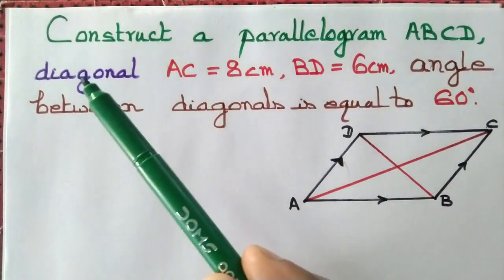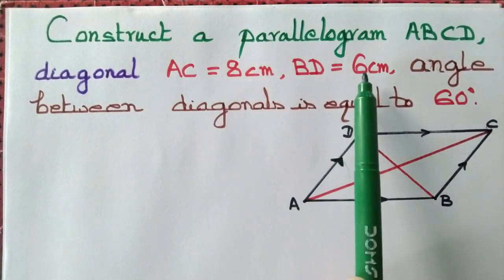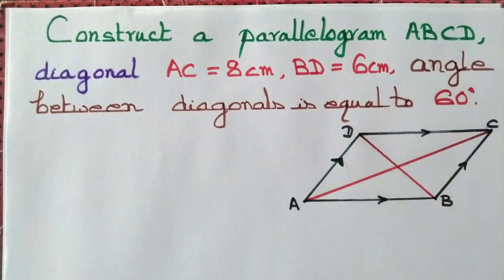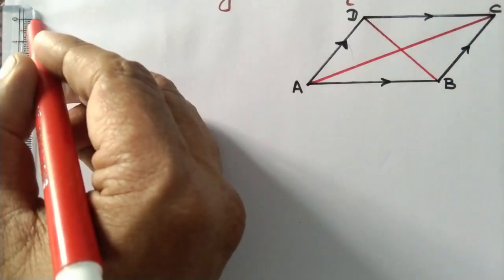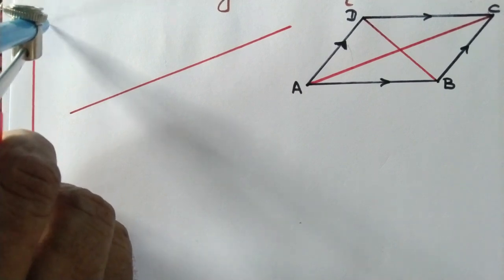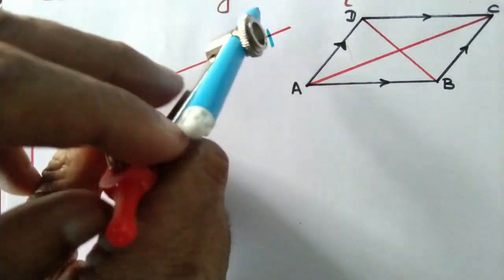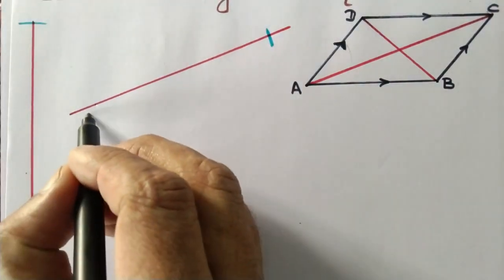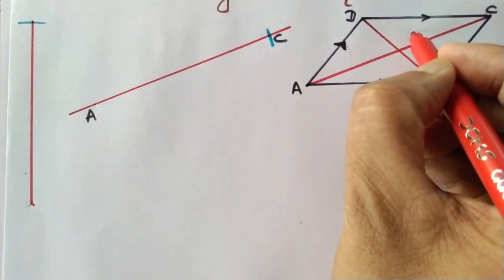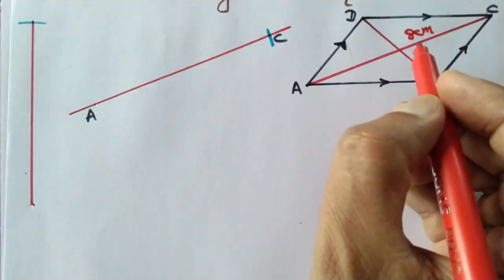Let us construct a parallelogram ABCD with diagonal AC measuring 8 centimeters, diagonal BD measuring 6 centimeters, and the angle between those diagonals equal to 60 degrees. First, we draw the line segment of 8 centimeters, then copy and paste it, so we obtain diagonal AC measuring 8 centimeters.